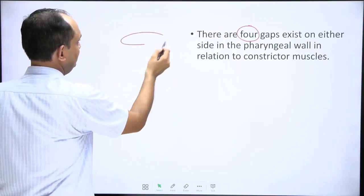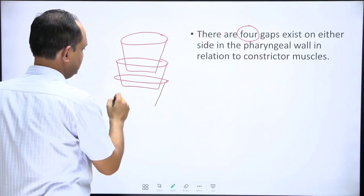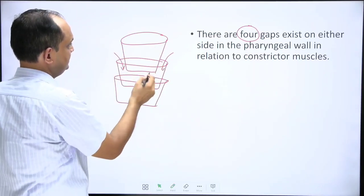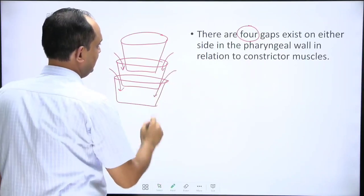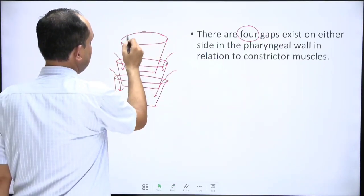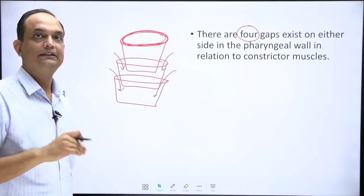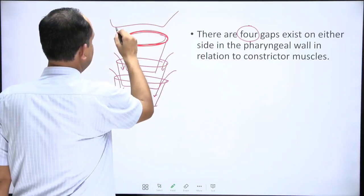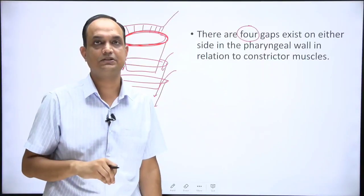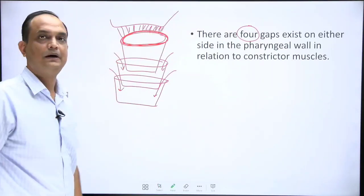Now, why are the gaps present? As we have already discussed, there is a telescopic pattern arrangement in the muscles. The gaps are present between the lower part of the upper constrictor and the upper part of the lower constrictor, and these gaps allow the passage of structures to enter inside the pharynx. The upper margin of the superior constrictor does not attach to the base of skull — that gap is known as the sinus of Morgagni, and this gap is completed by the pharyngeal basilar fascia.